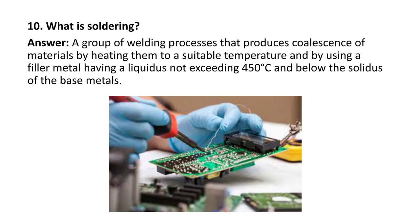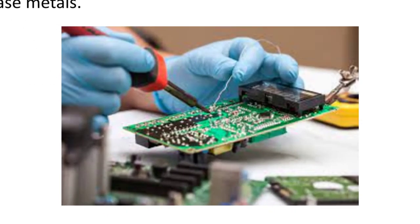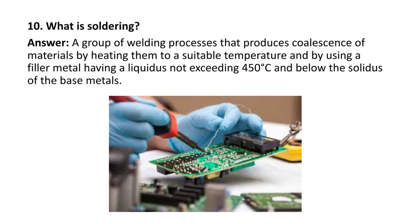Next question: what is soldering? It is a group of welding processes that produces coalescence of material by heating them to a suitable temperature and using a filler metal having a liquidus not exceeding 450 degrees Celsius, and below the solidus of the base metal. Soldering is generally used in electrical connections, with a maximum temperature of around 450 degrees Celsius. The filler melts but the base metal does not.